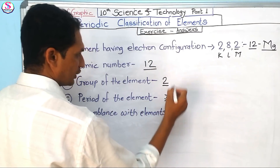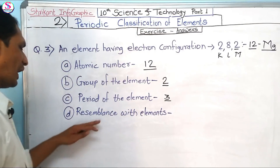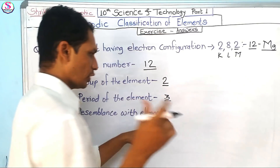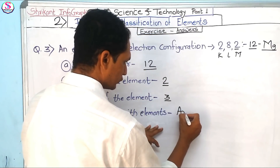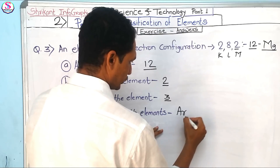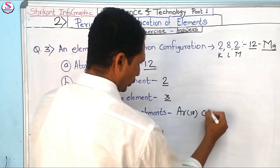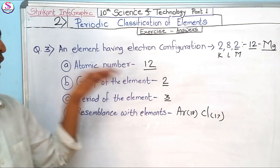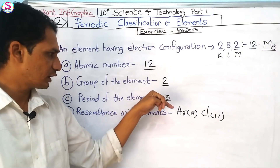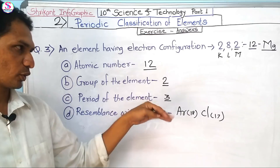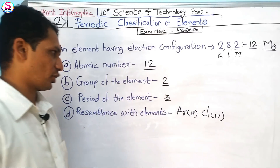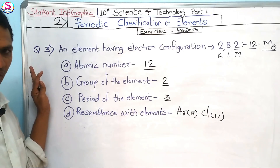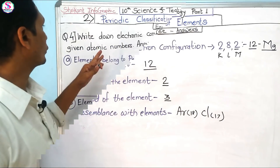Observing the configuration: first shell, second shell, third shell — it has three shells, so the element is in the third period. The elements showing resemblance with magnesium are argon (atomic number 18) and chlorine, because these two elements are also in the third period.